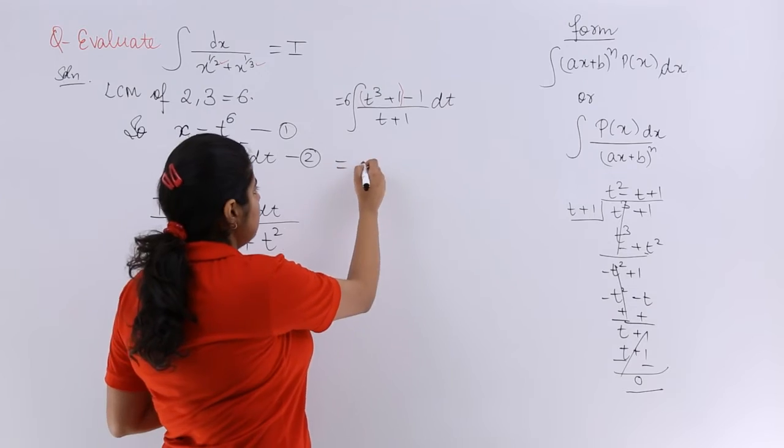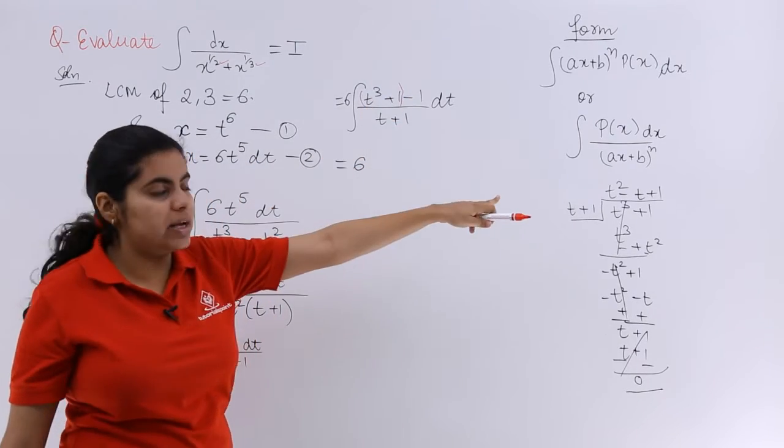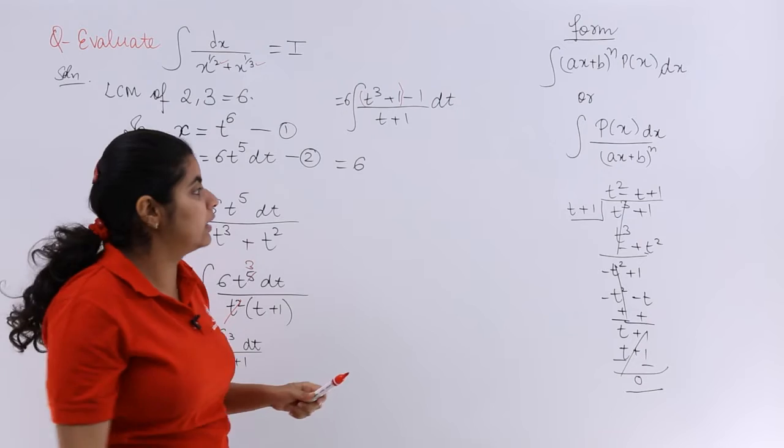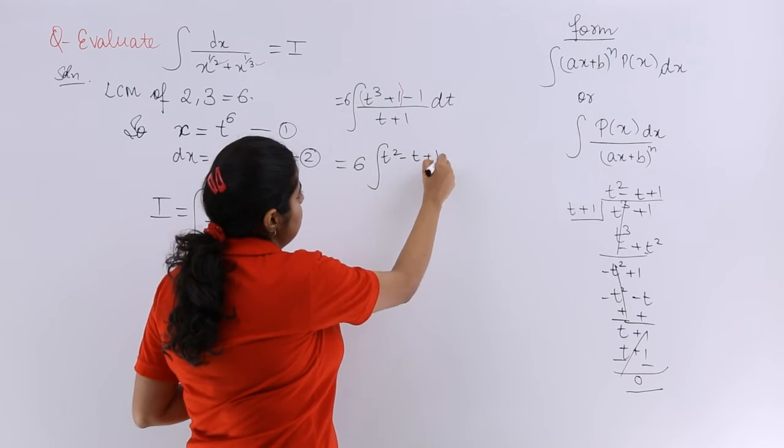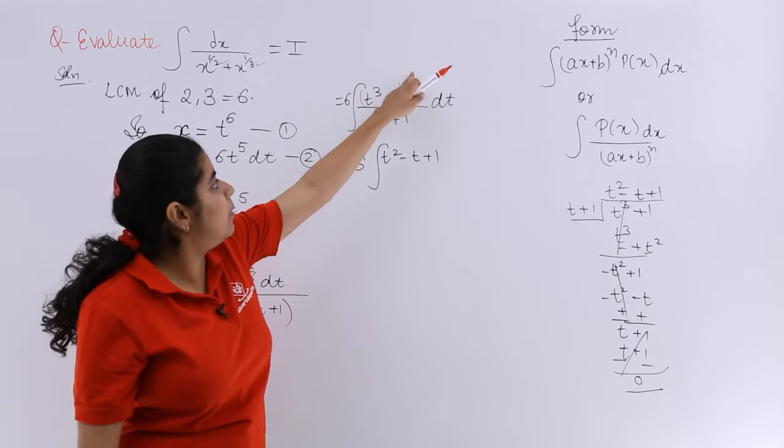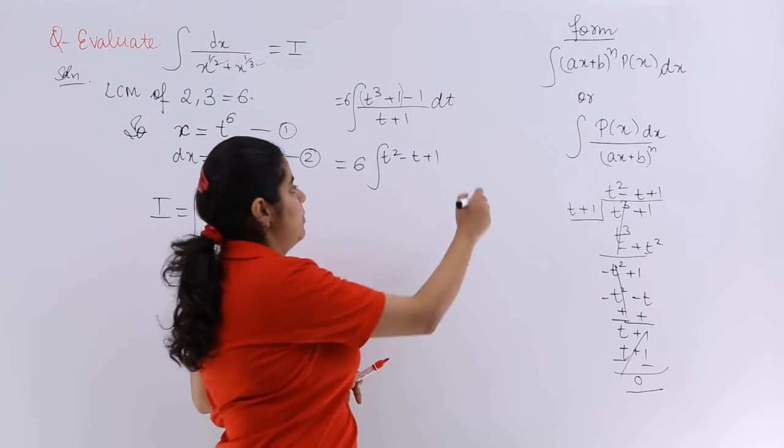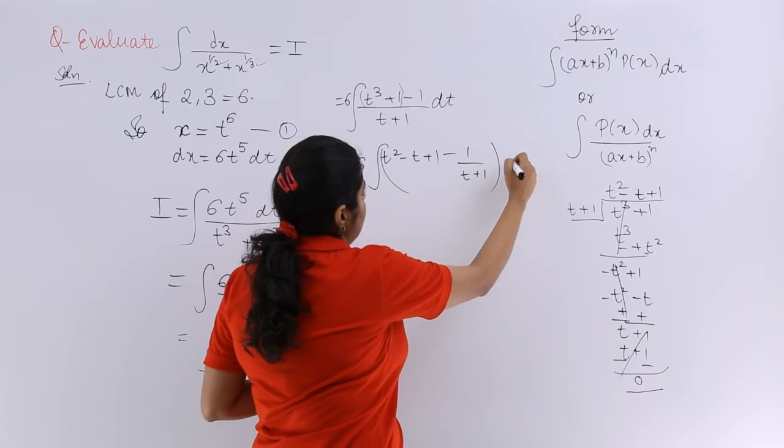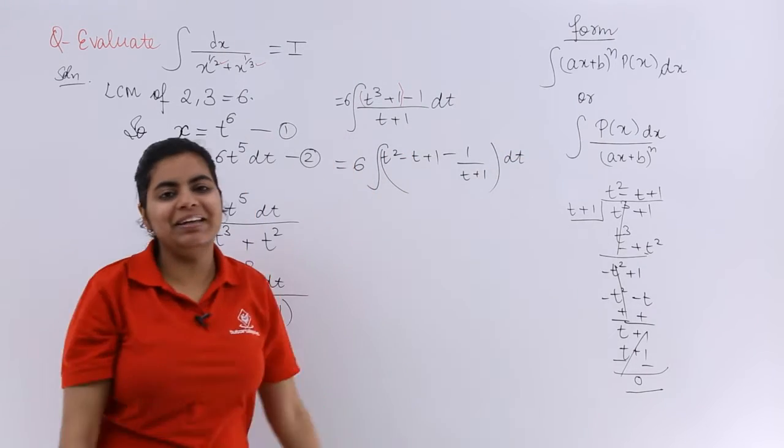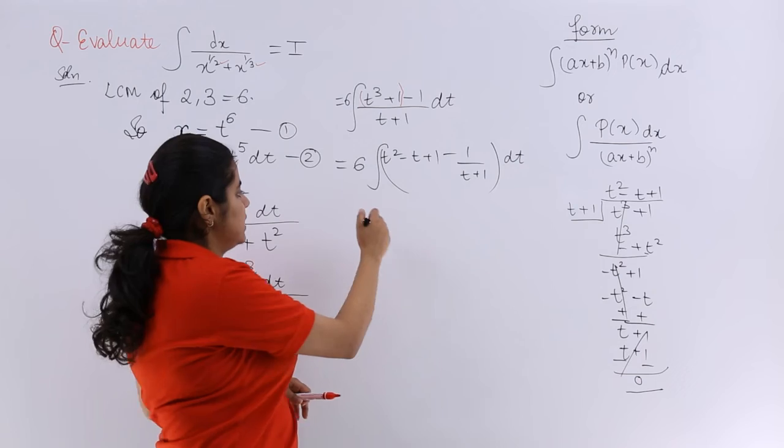Now, 6 already there. t cube plus 1 when treated with t plus 1 gave me what? It gave me t square minus t plus 1. And minus 1 upon t plus 1 is already there as it is. And whole thing should be now integrated with respect to t. So let's see what is the answer.